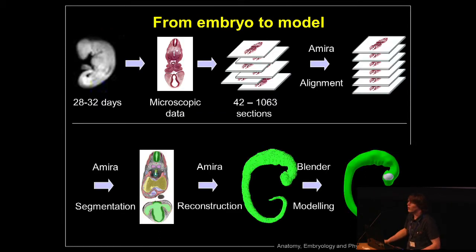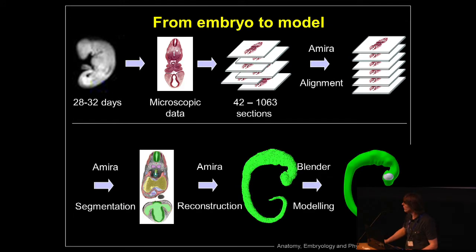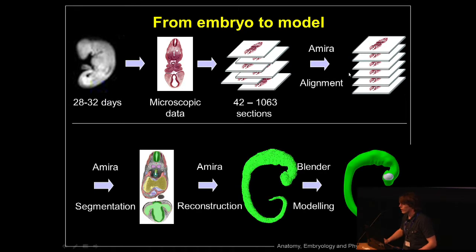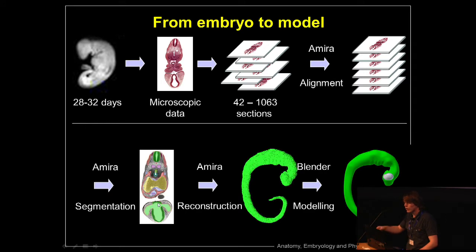You might wonder how we get a model from an embryo because the data is so small. In the leftmost corner we have an embryo at around 30 days old — it's actually microscopic data. What we do is cut it up into sections, and we can have a lot of different sections varying between 42, and some embryos can go up to 1,000 sections. We stack those and throw them into a software called Amira, which will align them. Then in Amira we segment the embryonic organs — for example, here in the green you can see part of the neurotube. This is done by medical students who go through sometimes 1,000 sections of a single embryo and select which part belongs to which organ.